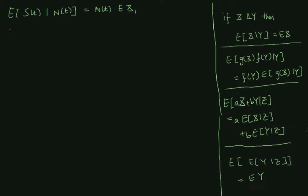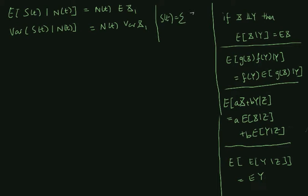We recall that S(t) is the sum of claims from 1 up to N(t), where N(t) is the number of claims at time t. We also assume that the claims are IID, and in particular they are independent from the claim number process.